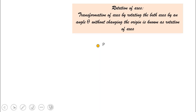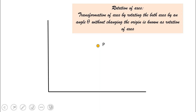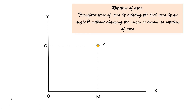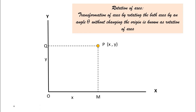Let us take a point P existing in a coordinate system with x-axis and y-axis. The point P meets the x-axis at M and the y-axis at Q. Let O be the origin; OM is the distance x and OQ is the distance y. We can represent P as P(x, y), so x and y define the location of point P.